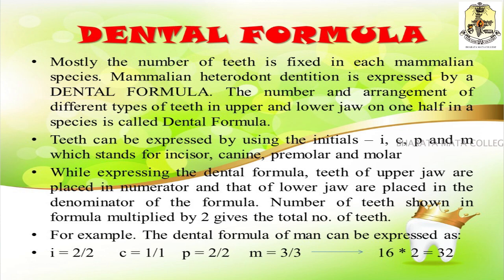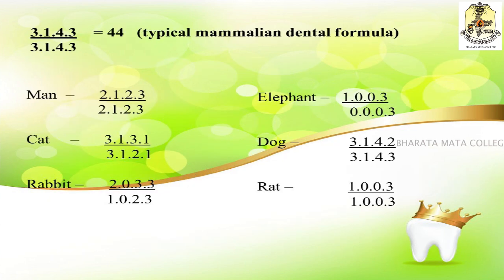For example, the dental formula of man: I = 2/2, C = 1/1, P = 2/2, M = 3/3. The total is 16, multiplied by 2 gives 32, so the dental formula of man is 32. For a typical mammalian dental formula it is 3, 1, 4, 3 — giving a total of 44 teeth.